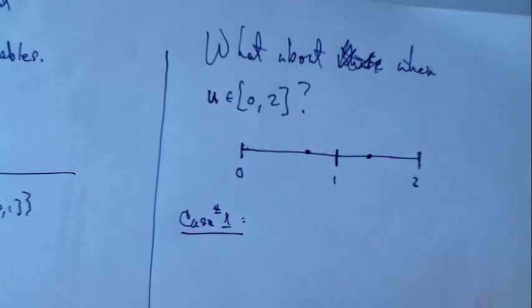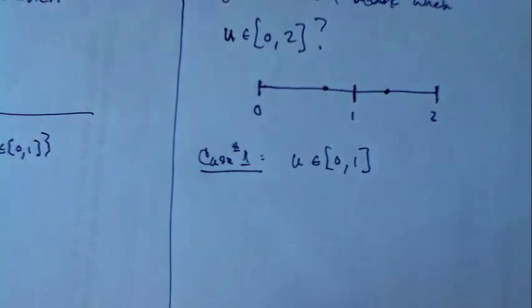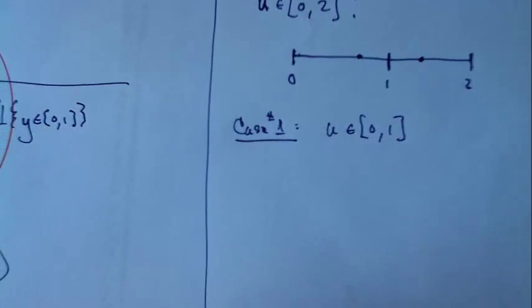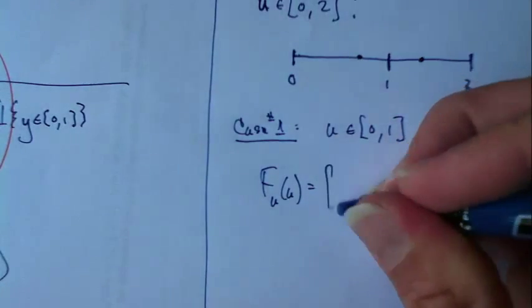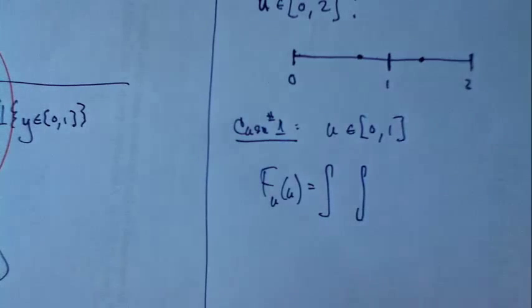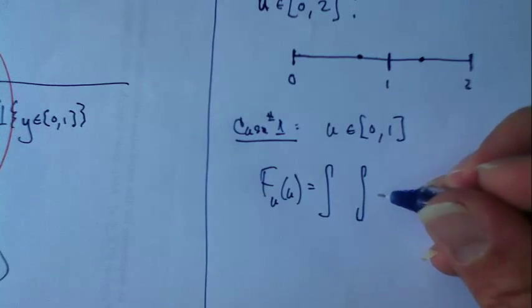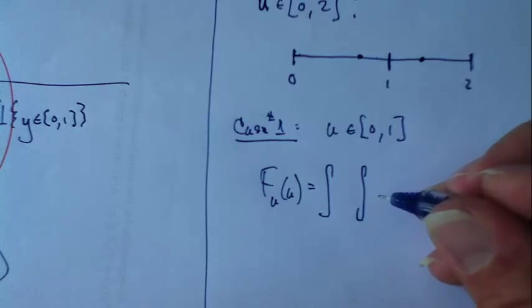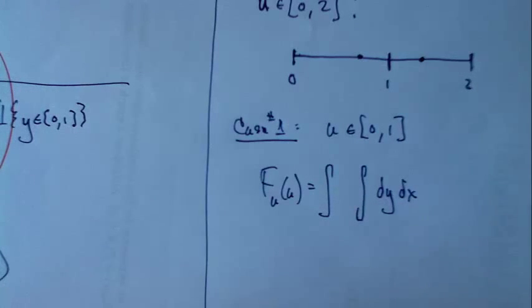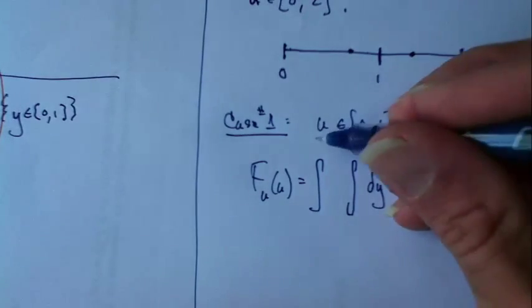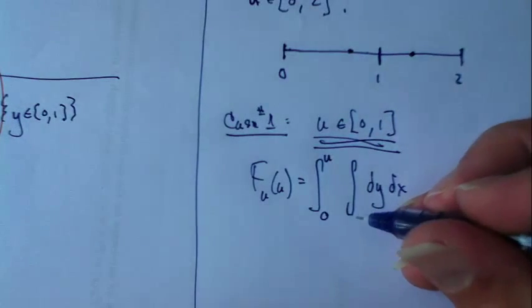Case number 1, for u in (0,1). I'm going to have f sub u of u is - now first of all, my density function is just 1 in there, so I don't even need to write the indicators because I'm going to deal with the limits directly. I'm going to integrate x last. In this case x will go from 0 up to u, and then y will go from 0 up to u minus x.